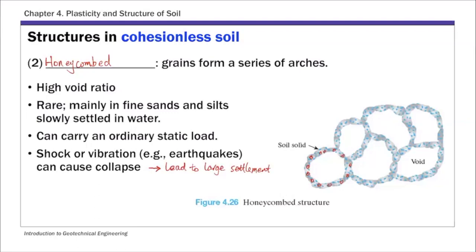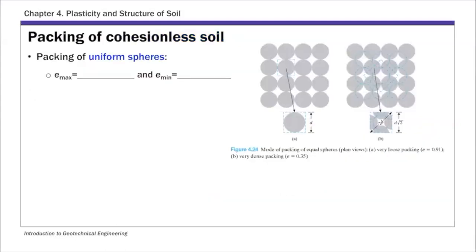Now let's look at the packing of cohesionless soil, which specifically refers to single grain structure. The packing is affected by particle shape, particle size, size distribution, and composition of particles. To understand how these factors affect packing, consider uniform spheres: if you pack spheres of equal sizes, the maximum void ratio e_max — corresponding to the loosest state — is achieved with very loose packing.